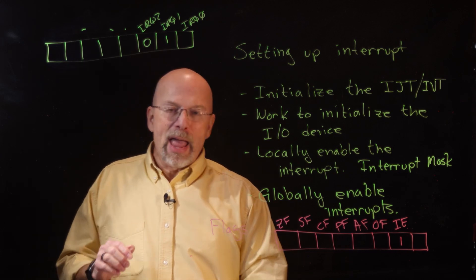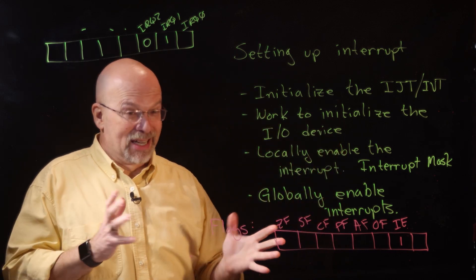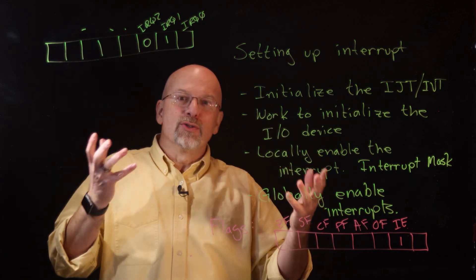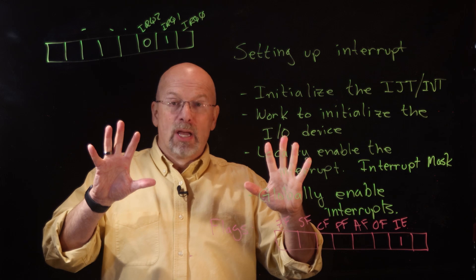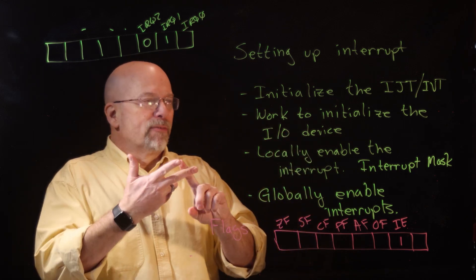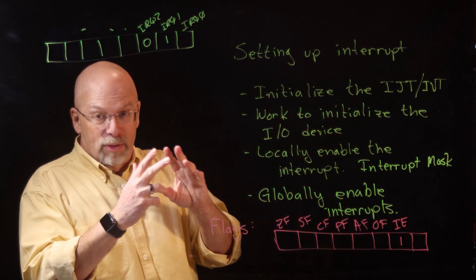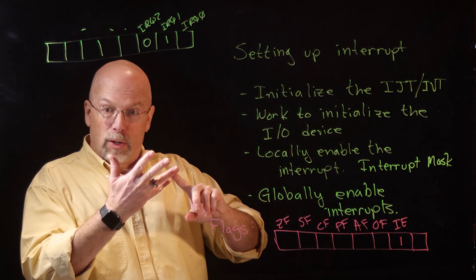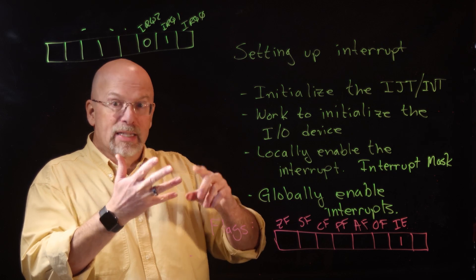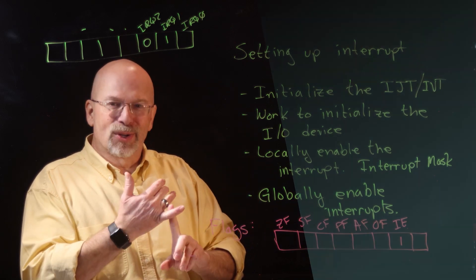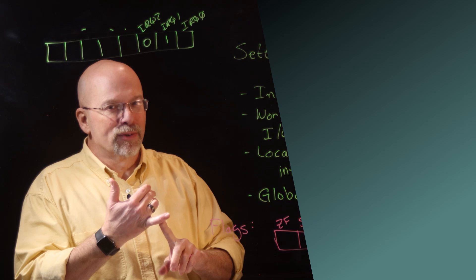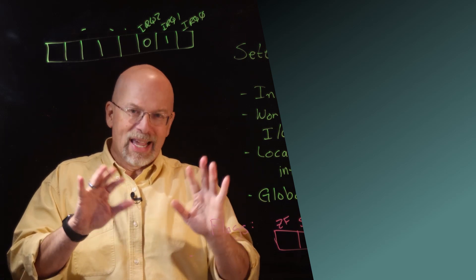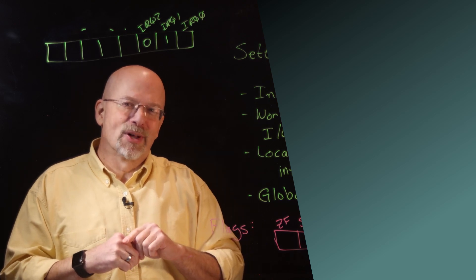That's a brief introduction into how we set up interrupts. It includes three things: the interrupt jump table or interrupt vector table, the setup code in our main code to make the interrupt occur, and the ever-important interrupt service routine. We'll give some examples of how to do this using our Raspberry Pi in the next episode.